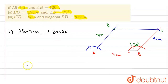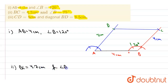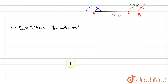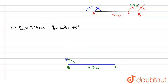For the second construction, we are given BC=4.7cm and angle B=75°. Draw line BC of 4.7cm — this is point B and this is point C. At B, we need to construct a 75° angle.